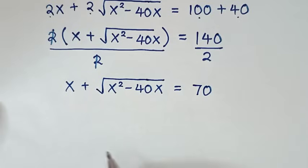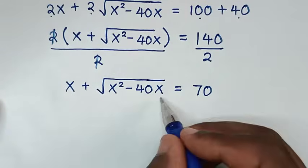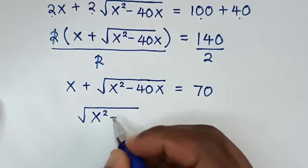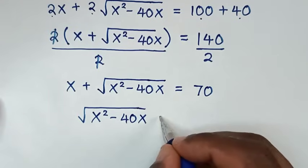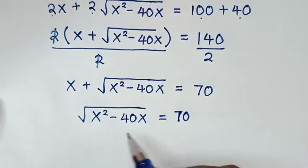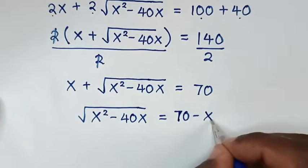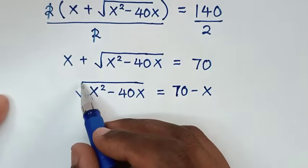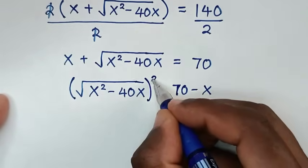In the next step, we move x to the right side, so: square root of x squared minus 40x equals 70 minus x.